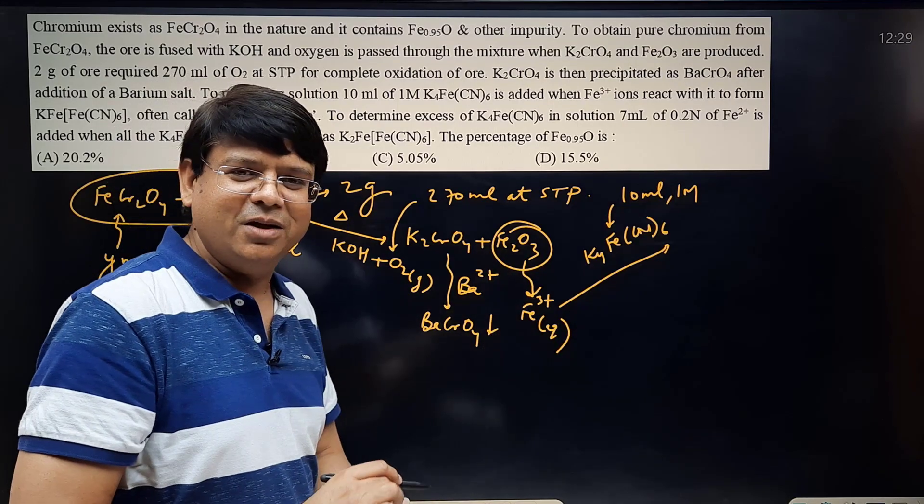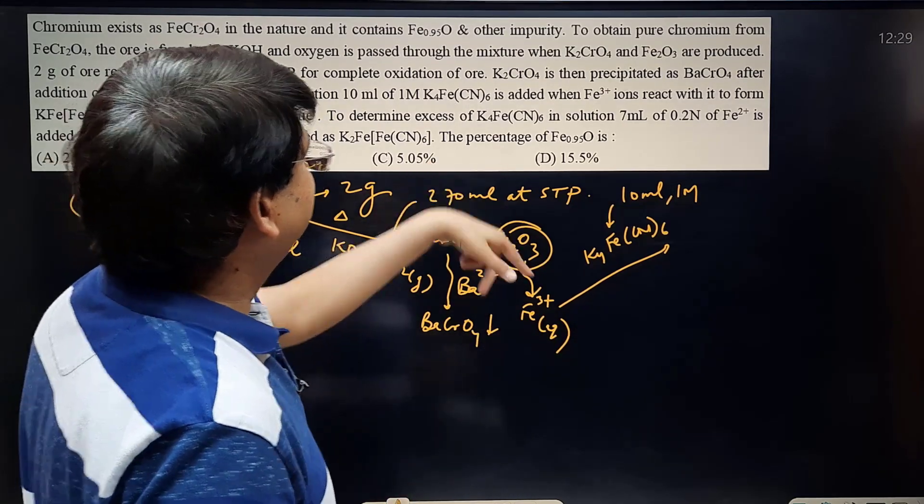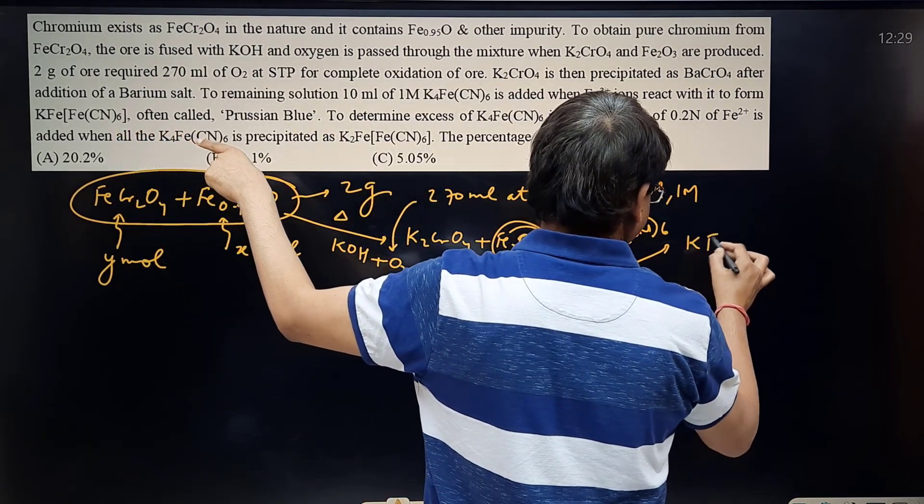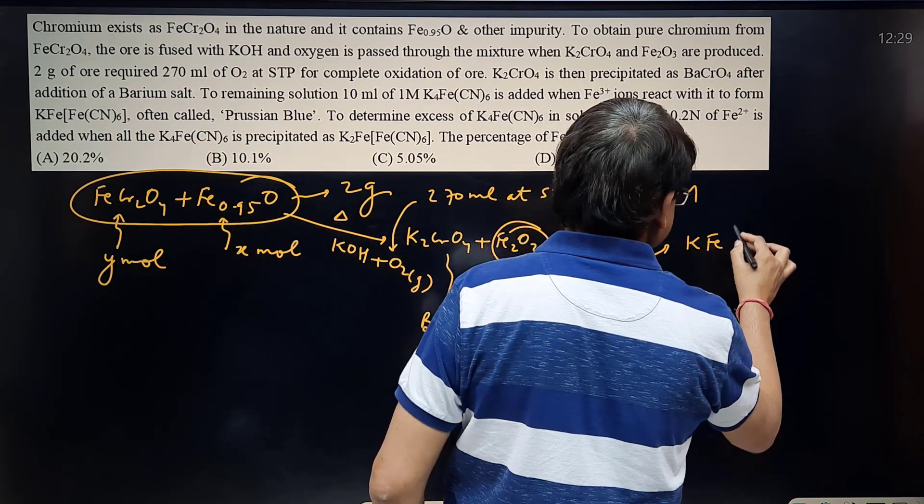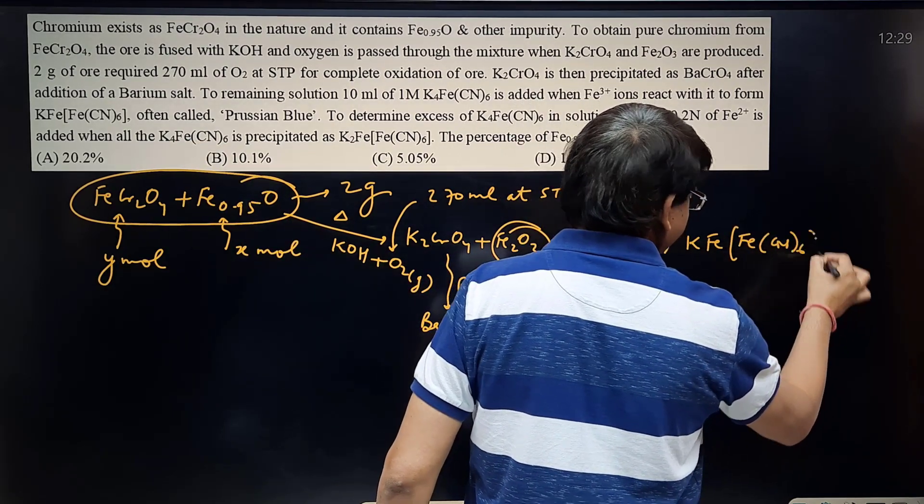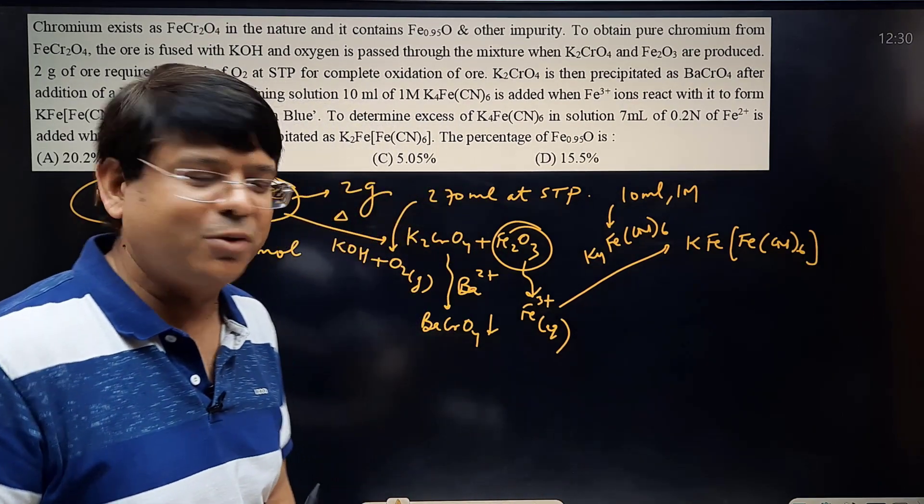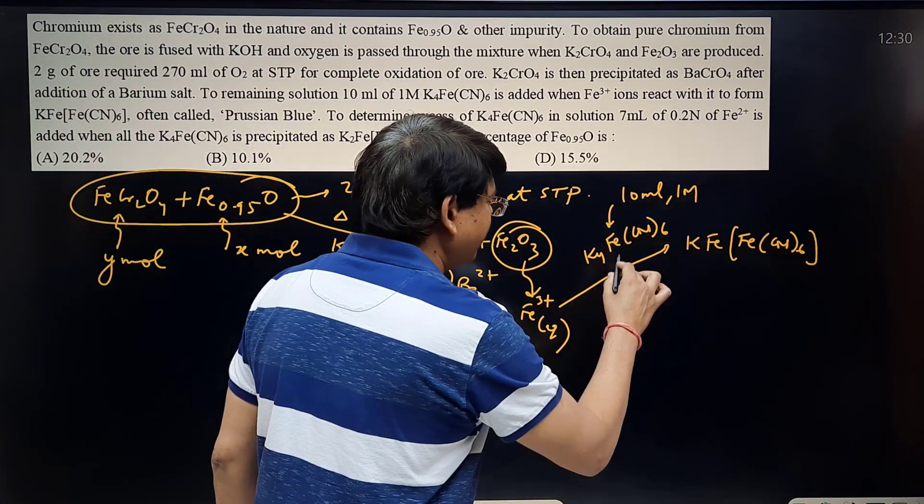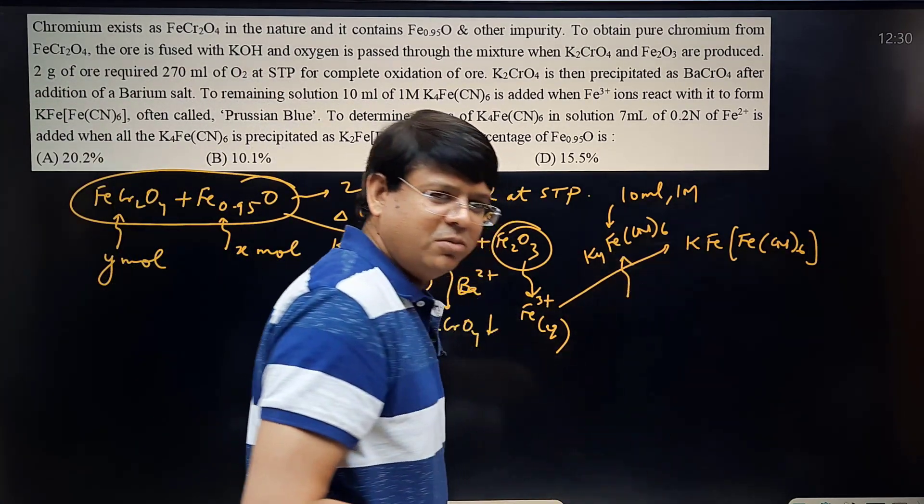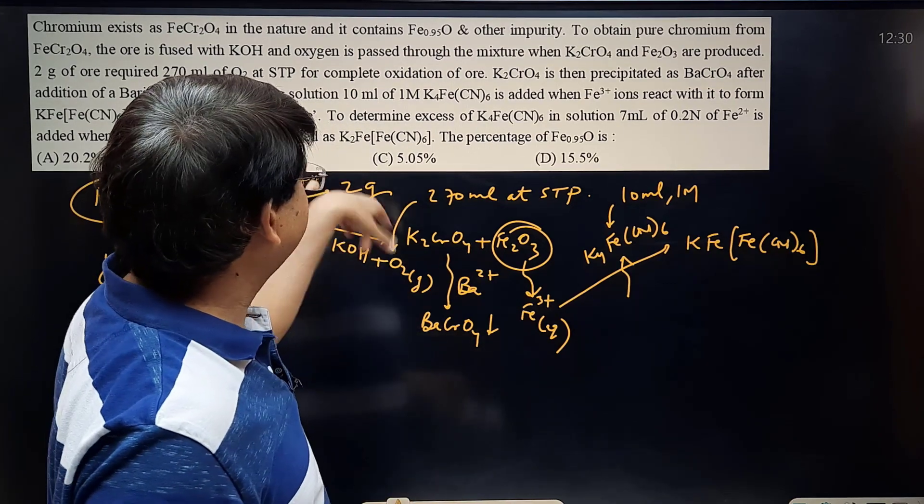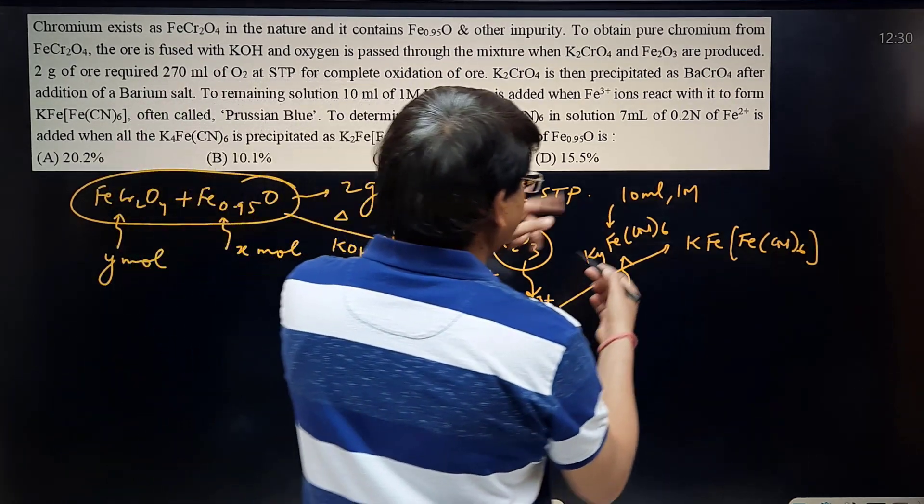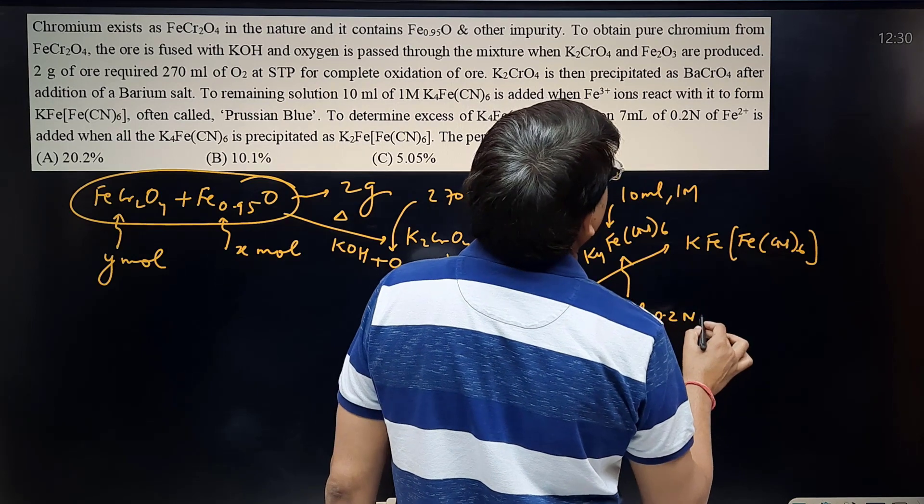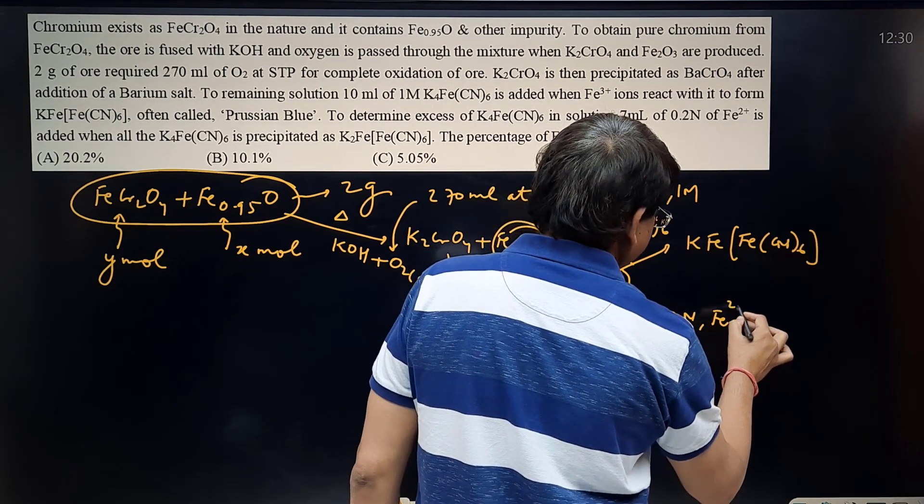And then Fe3+ ion reacts with it to form KFeFeCN6. Of course this reaction itself is very important and this is called soluble Prussian blue. To determine the excess of K4FeCN6, so this K4FeCN6 is not completely consumed, it's a kind of back titration. And this remaining amount of K4FeCN6 has been neutralized with 7 ml 2N of Fe2+.